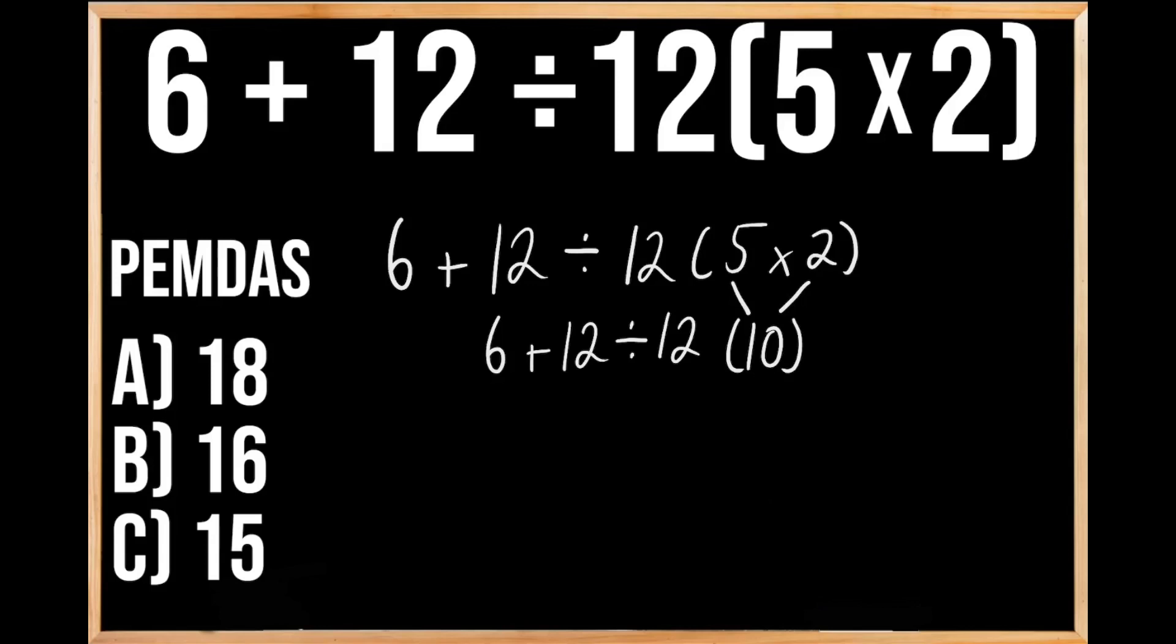So first we're going to divide 12 by 12, which gives us 1, and then we bring down the rest of this problem. So we have 6 plus 1, parentheses 10, close parentheses.